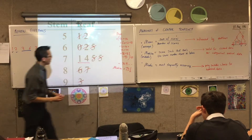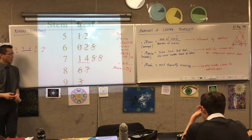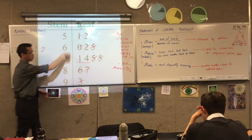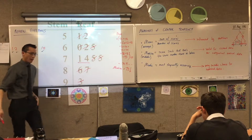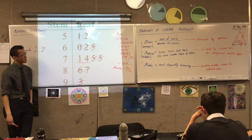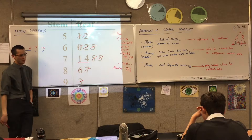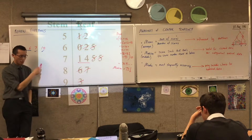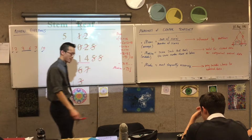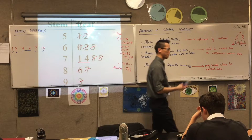Now, this crossing off thing was kind of reasonable because there are only 12 scores. How would we do it if there were, like, 120 scores? This would take forever. Is there a quicker way that doesn't require me to cross everything off?